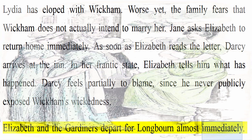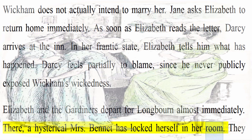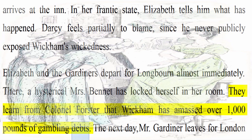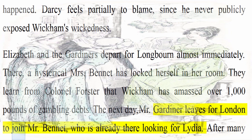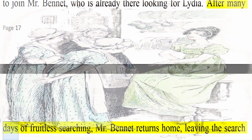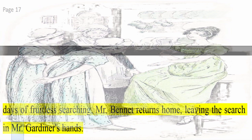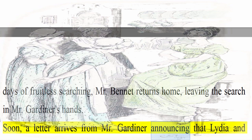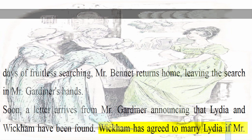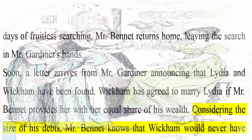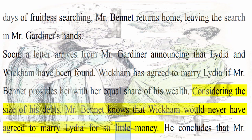Elizabeth and the Gardiners depart for Longbourn almost immediately. There, a hysterical Mrs. Bennet has locked herself in her room. They learn from Colonel Forster that Wickham has amassed over £1,000 of gambling debts. The next day Mr. Gardiner leaves for London to join Mr. Bennet, who is already there looking for Lydia. After many days of fruitless searching, Mr. Bennet returns home, leaving the search in Mr. Gardiner's hands. Soon, a letter arrives from Mr. Gardiner announcing that Lydia and Wickham have been found. Wickham has agreed to marry Lydia if Mr. Bennet provides her with her equal share of his wealth. Considering the size of his debts, Mr. Bennet knows that Wickham would never have agreed to marry Lydia for so little money. He concludes that Mr. Gardiner must have paid off Wickham's debts to solidify the deal.